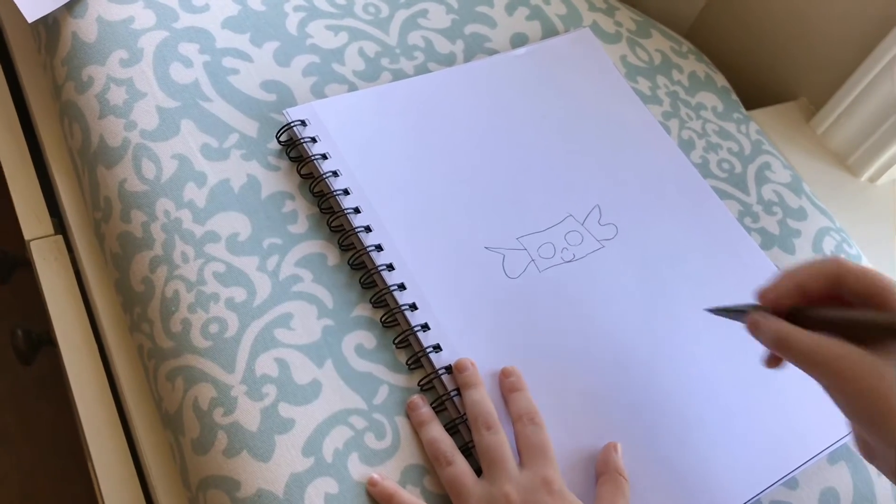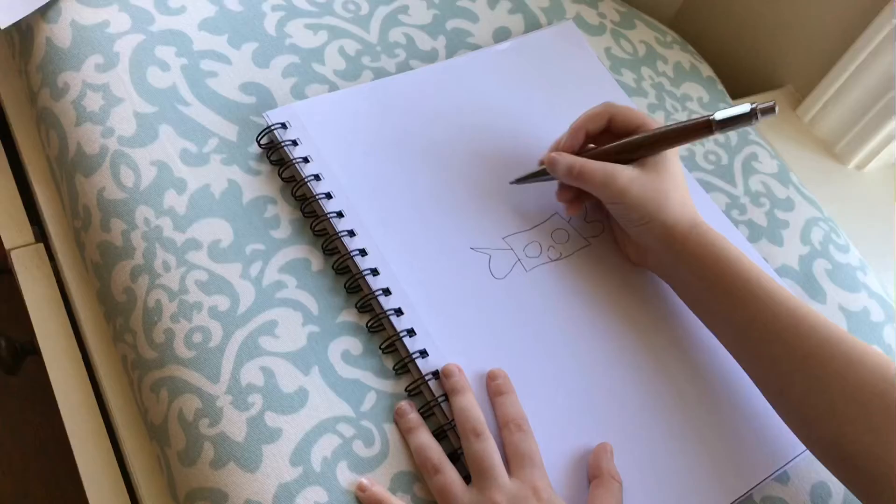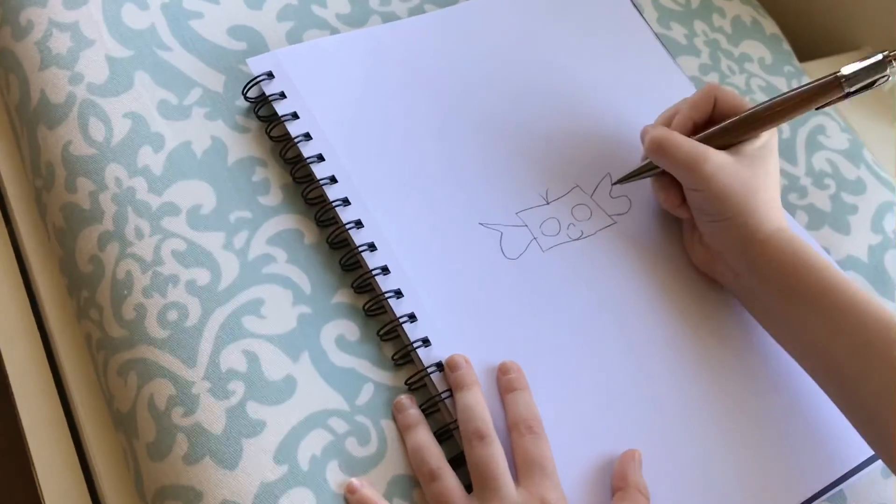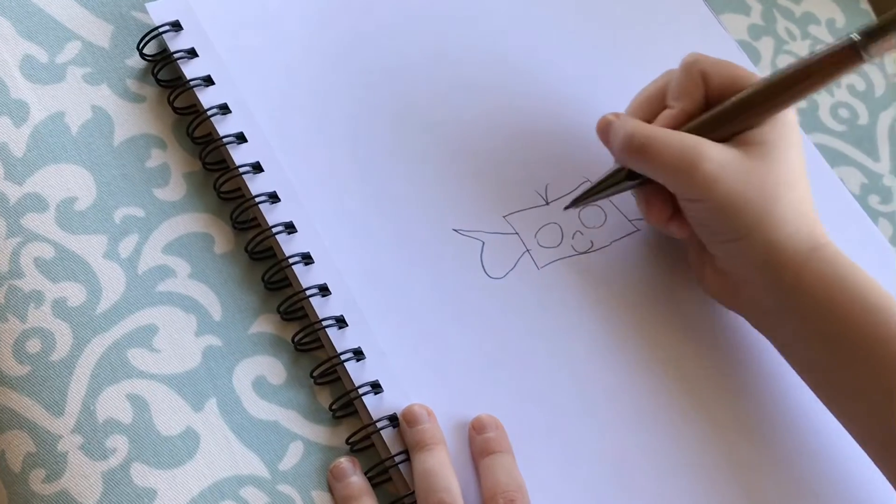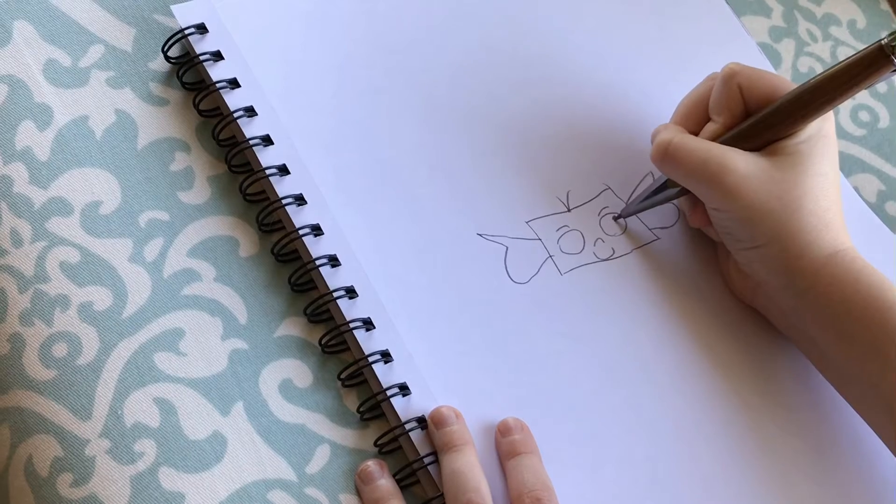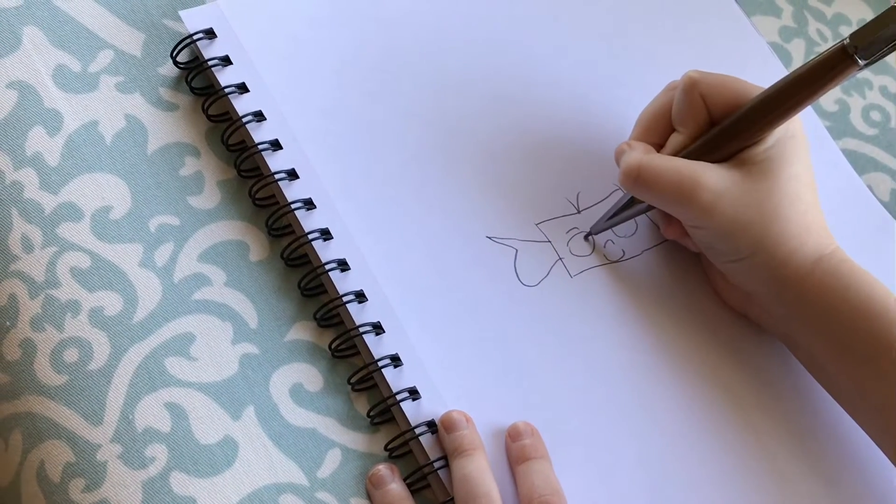And then you're going to make a little bit of details. So, one, two. So then you're going to make eyebrows. Then you're going to make his eyes. One. And then two.